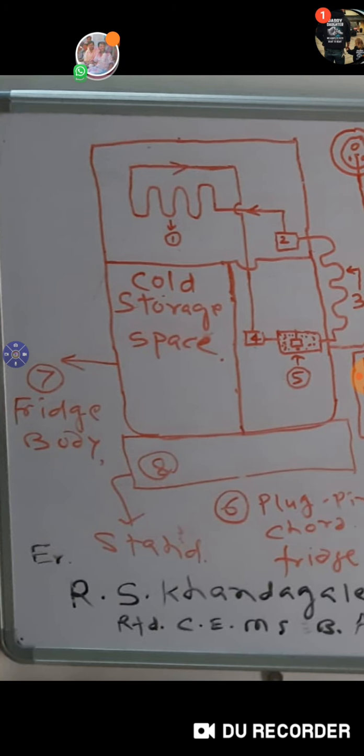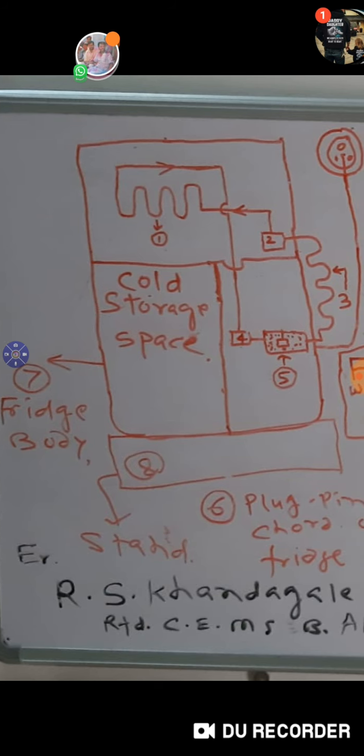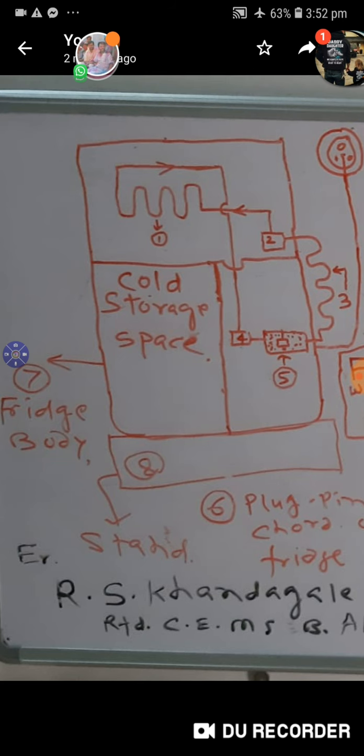This is a cooling coil and below that is a cold storage space. And one number is an expansion valve. Three number is air-cooled coil behind the fridge. And five number is compressor installed in a gas box. And four number is non-return valve. Now what the function is like this.